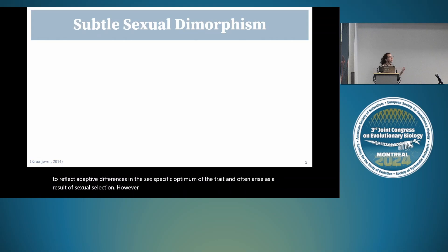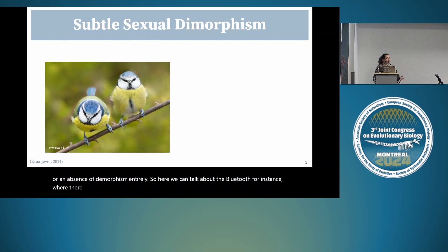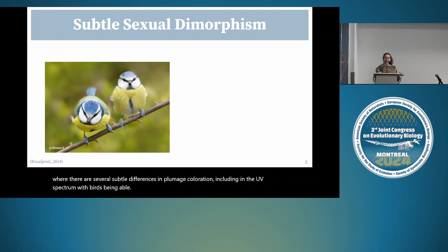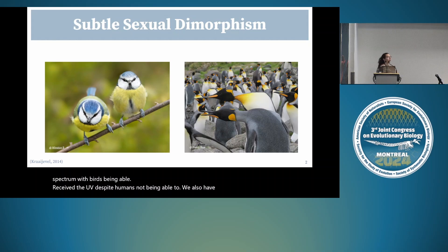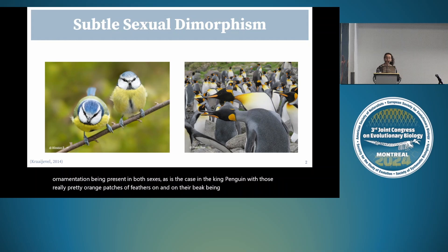However, sexual selection can also result in subtle sexual dimorphisms or an absence of dimorphism entirely. For the blue tit, there are subtle differences in plumage coloration, including in the UV spectrum, with birds able to perceive UV despite humans not being able to. We also have examples of more elaborate ornamentation present in both sexes, as in the king penguin, with those really pretty orange patches of feathers on their beak being present in both sexes.